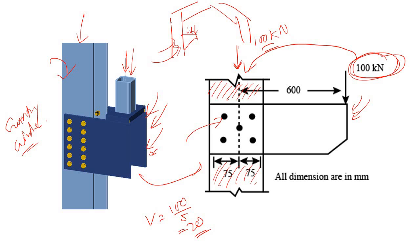Due to the eccentricity, it will produce a torsion here — not an out-of-plane moment, because this is an in-plane moment, and an in-plane moment is nothing but torsion. So if you have a bolt group and you are applying torsion to it, we need to understand how it is distributed.